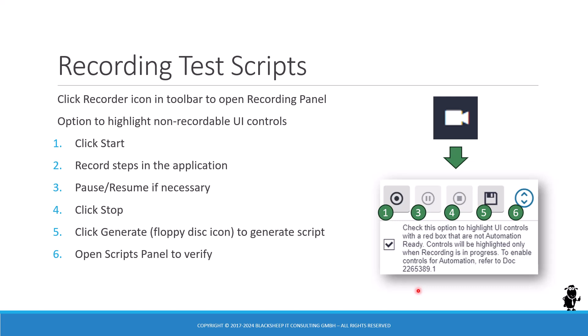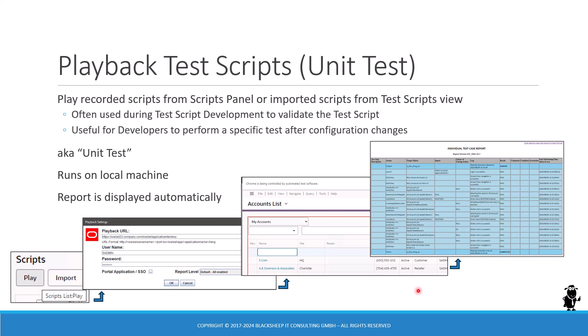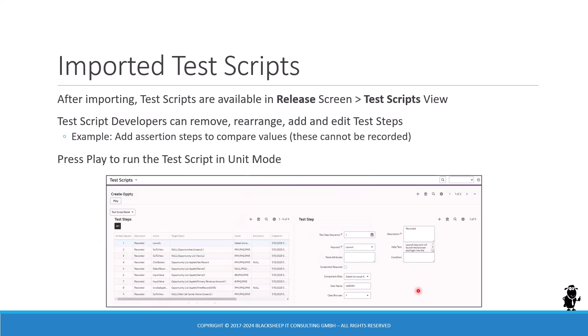Every test automation starts with recording and defining the test scripts — recording the processes — so we have an entire chapter dedicated for that, and also for the subsequent steps: the playback in unit mode and of course to rearrange, add, and edit test steps to existing recorded or manually created test scripts.